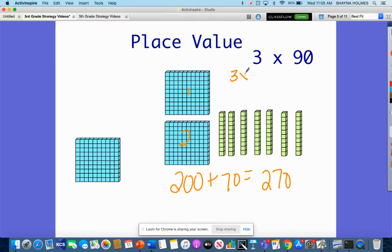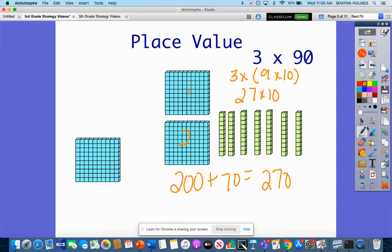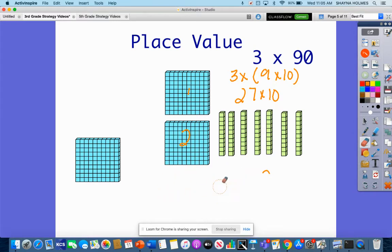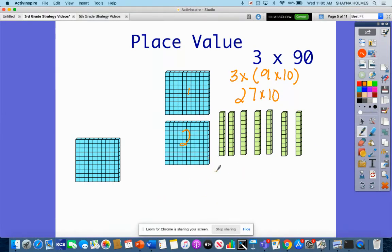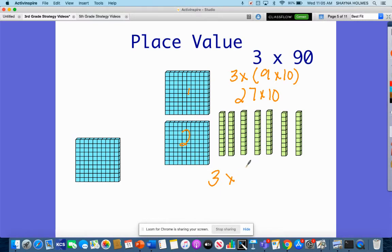Another way to write this, I can say 3 times 9 times 10, so this can be 27 times 10. I can also write this as 3 times 10 times 9 and have 30 times 9. The commutative property tells me that I can move these numbers around because I'm always going to get the exact same answer. It will always be 270 no matter what. This is what it looks like with place value blocks.